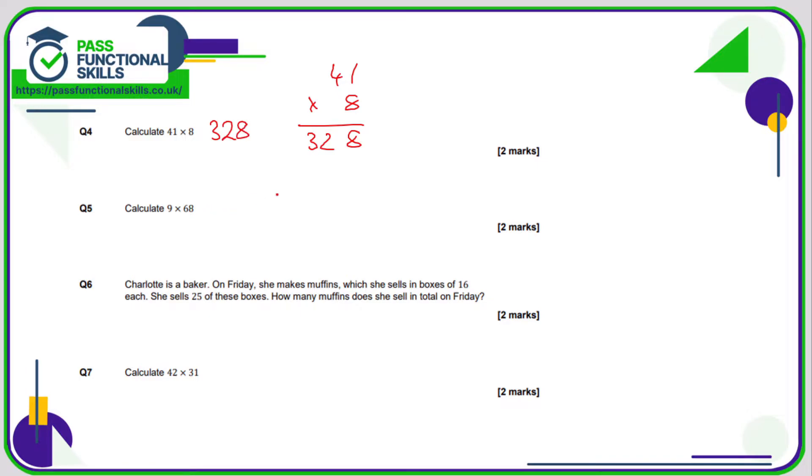9 times 68. I'll turn it into 68 times 9, keeping the single digit number on the bottom. 8, 9's, that's a little bit nasty. 8, 9's are 72, so that's 2 carry 7. 6, 9's, that's also not terribly pleasant, but that's 54. 54 plus 7, that's the same as 57 plus 4, is 61, so the answer is 612.